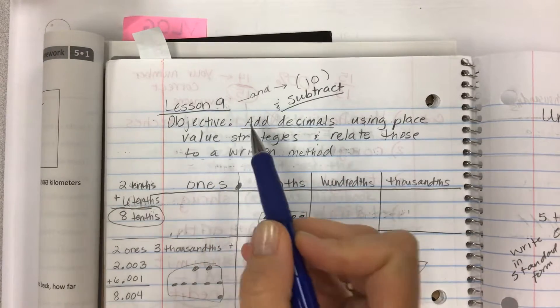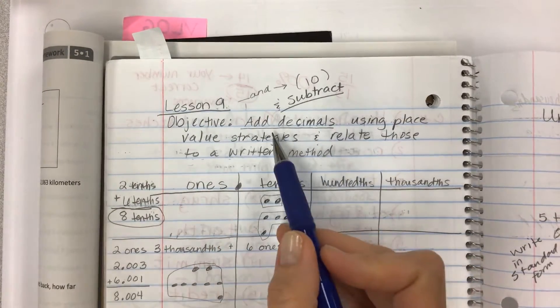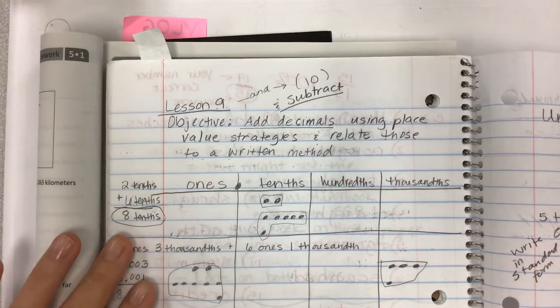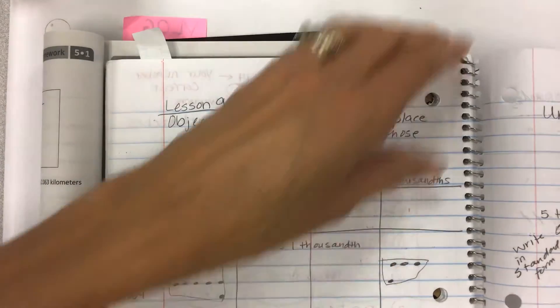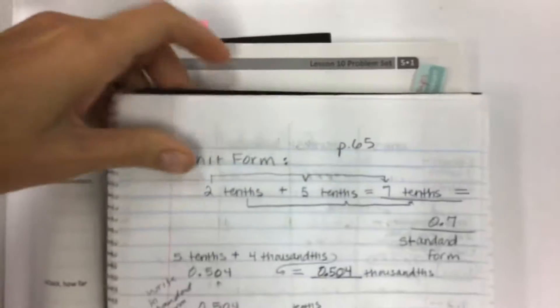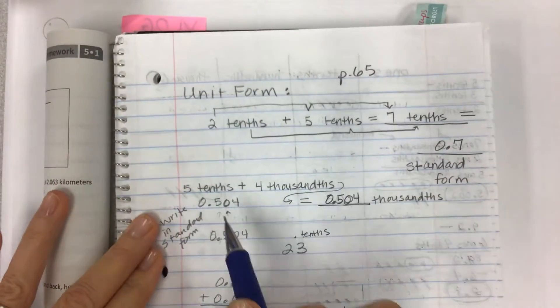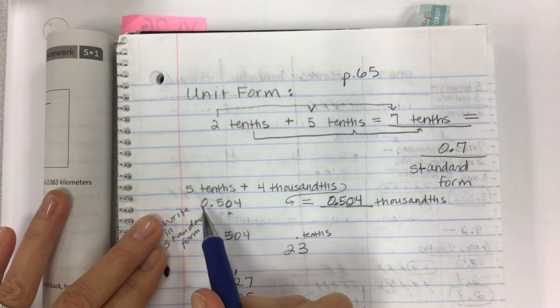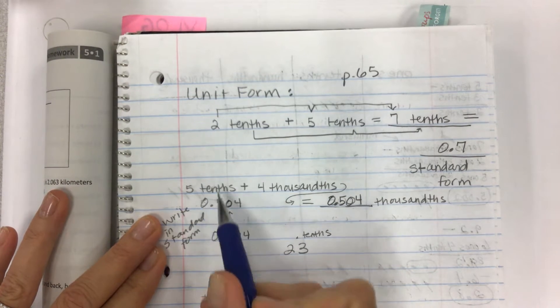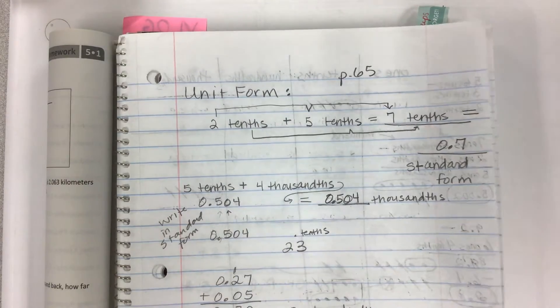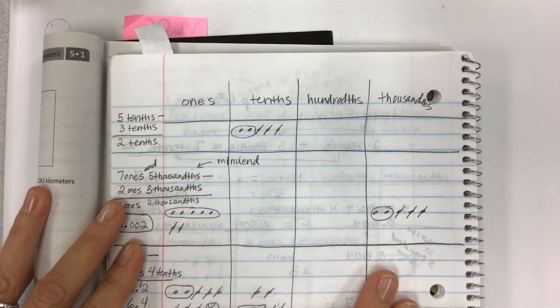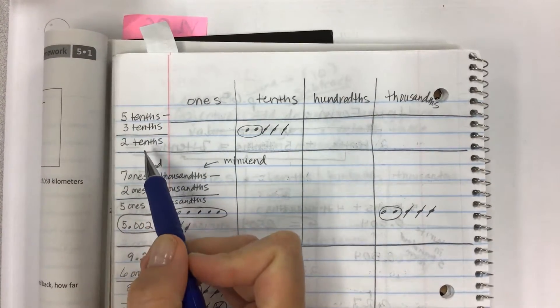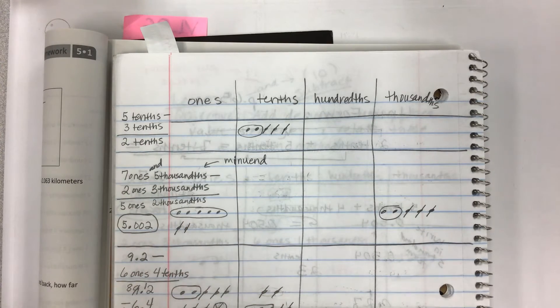Yesterday we did Lesson 9, and the objective is still the same, but we're doing subtraction with decimals using place value strategies and relating those to a written method. We used the place value chart, and then also found a boo-boo. Remember we did this in class, that wasn't 5 in the ones, it was 5 in the tens, and so we made it correct.